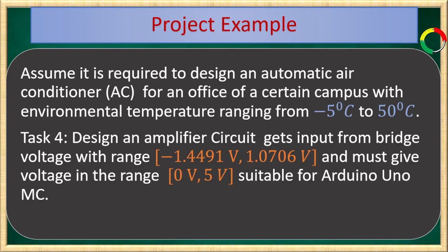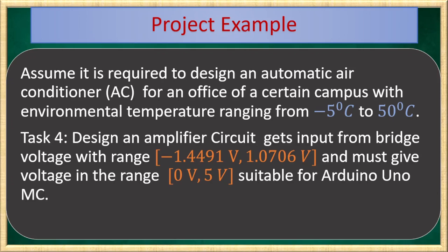Let's come back to our project. The aim of the project is to design an AC system for a certain office where the environmental temperature varies from minus 5 degrees centigrade to 50 degrees centigrade. In our previous videos, we selected an appropriate sensor and studied its behavior. In our third and fourth videos, we designed a bridge circuit and studied its behavior via simulations using Proteus software. As we have seen, the voltage range from the bridge circuit varies from minus 1.4491 V to 1.0706 V, which is not suitable for microcontrollers. Our Arduino microcontroller needs a voltage range either from 0 V to 3.3 V, or in some cases from 0 V to 5 V, so we need to bring the bridge circuit voltage into this recommended range.